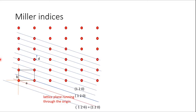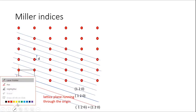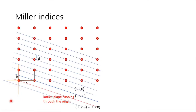Toh aapke paas yeh set of planes banaya hain — yeh aapke paas ek planes ki family hai. Aapke paas bahut saare planes hain, tudus ek ka parallel hai, toh poore sabhi planes ek family ko represent karte hain aur in sabhi ka Miller Index bhi same niklega. First of all, this is the blue plane, so we have a coordinate system, we have an origin. I select the origin here. A axis is in this direction and B axis is in this direction.